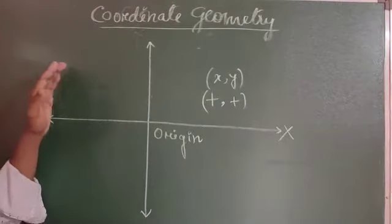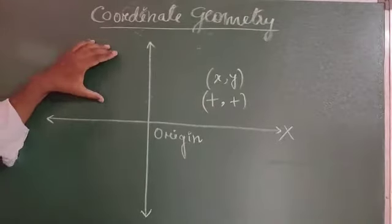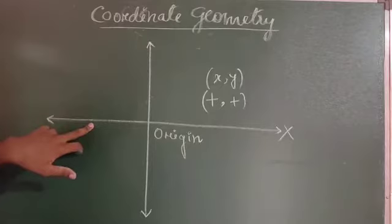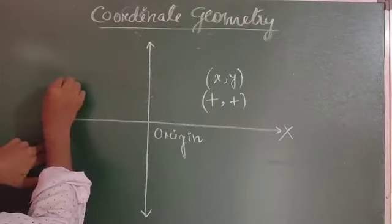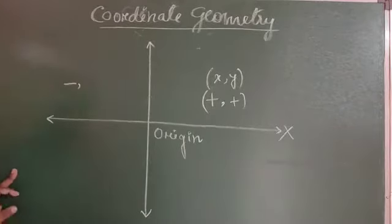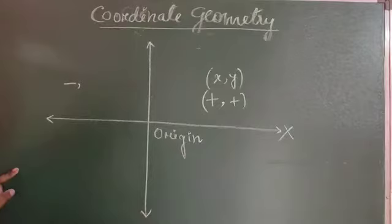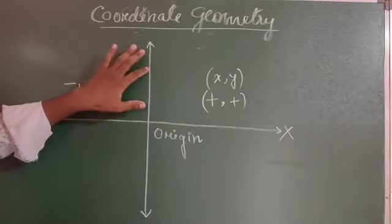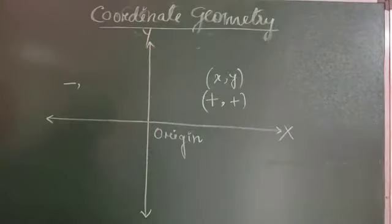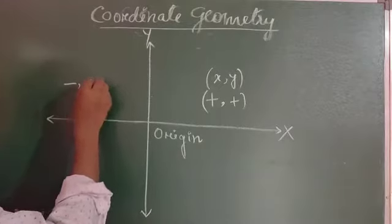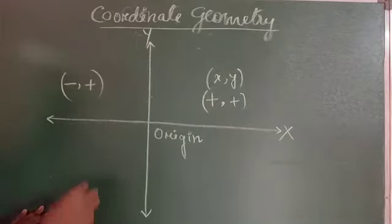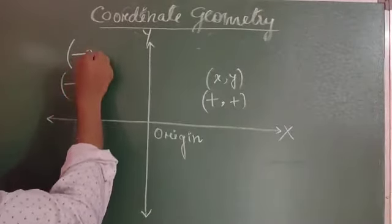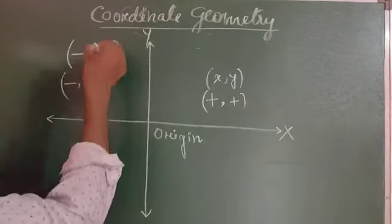For the second quadrant, it passes through the negative — that is, the left — part of the x-axis, and touches the upper part of the y-axis. So x is negative and y is positive. Therefore the form of the coordinate of a point in the second quadrant is (−x, y).